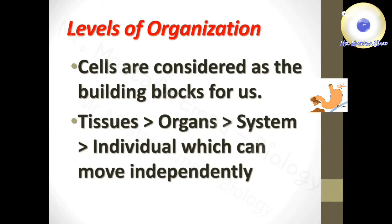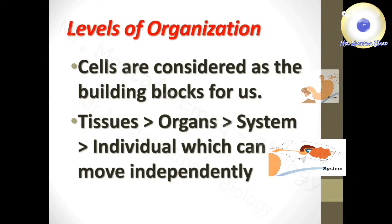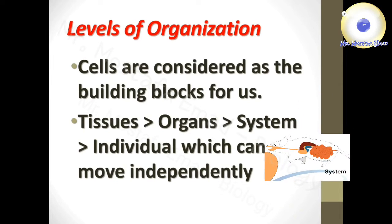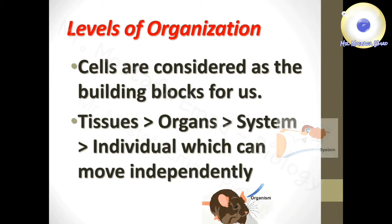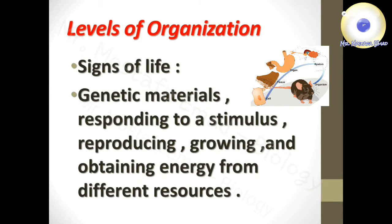A number of organs can build a system. These systems can be gathered together to make the whole individual, which can move independently. This individual has many signs of life, such as having genetic material, responding to stimuli, reproducing, growing, and obtaining energy from different resources.